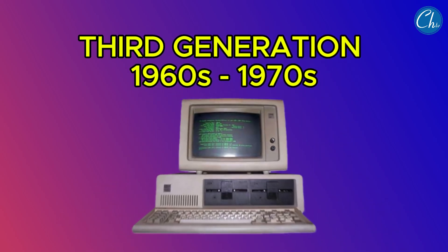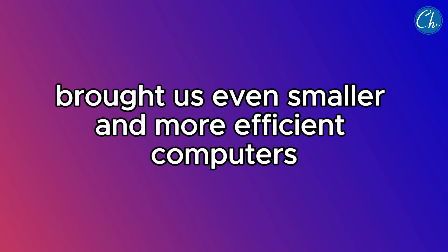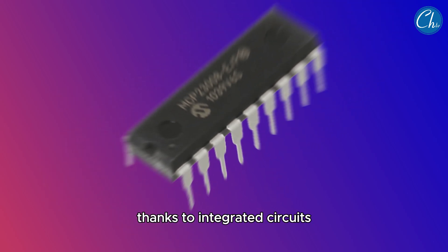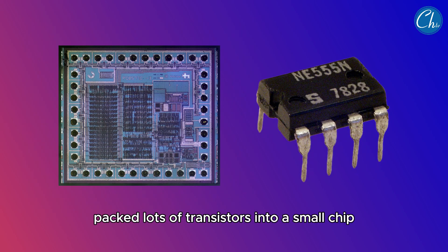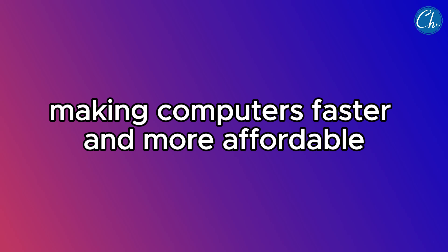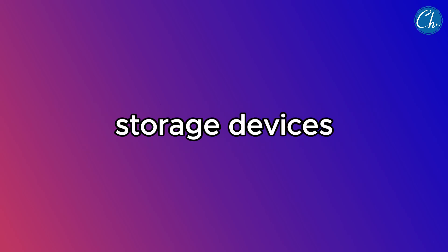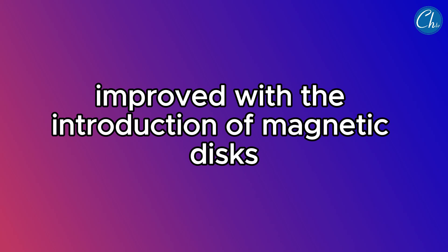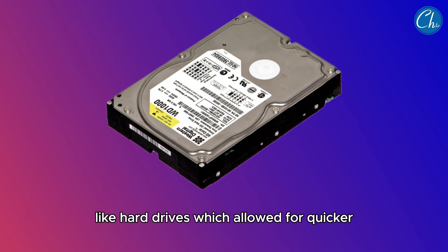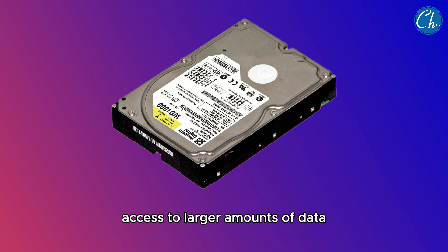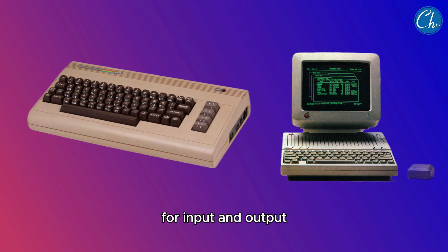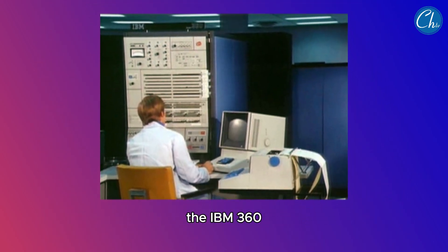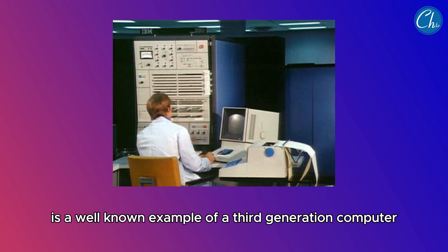The third generation, from the 1960s to the 1970s, brought us even smaller and more efficient computers, thanks to integrated circuits. These tiny circuits packed lots of transistors into a small chip, making computers faster and more affordable. Storage devices improved with the introduction of magnetic disks like hard drives, allowing quicker access to larger amounts of data. During this era, we started using keyboards and monitors for input and output. The IBM 360 is a well-known example of a third-generation computer.